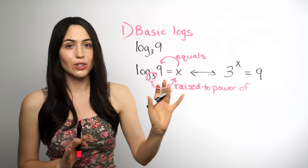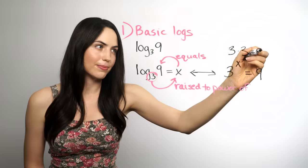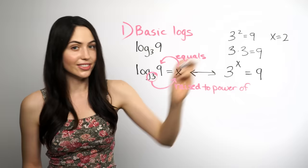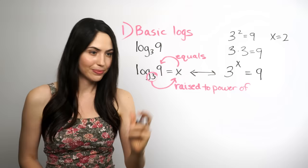All you have to do is figure out what x makes that true. Since 3 times 3 equals 9, or 3 squared equals 9, you can tell that x must be 2. And since x equals 2, that's your answer for the log — that log is equal to 2. The log is always equal to a power from the exponential version. So your answer is 2.